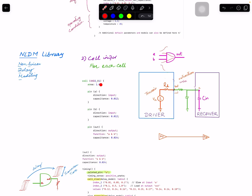A standard cell can act as both a driver and a receiver. When it acts as a receiver — for example an AND gate or buffer receiving an input — what matters is its input capacitance. If you recall from CMOS lectures, the input has a high capacitance and there is no direct path from input to source or drain because there is a gate oxide in between. So when the cell is a receiver, you are interested in its input capacitance.